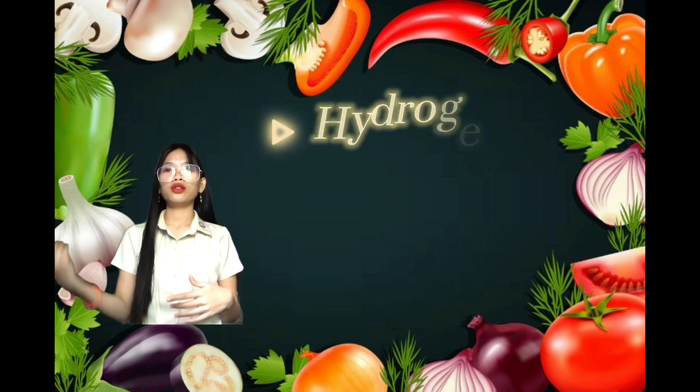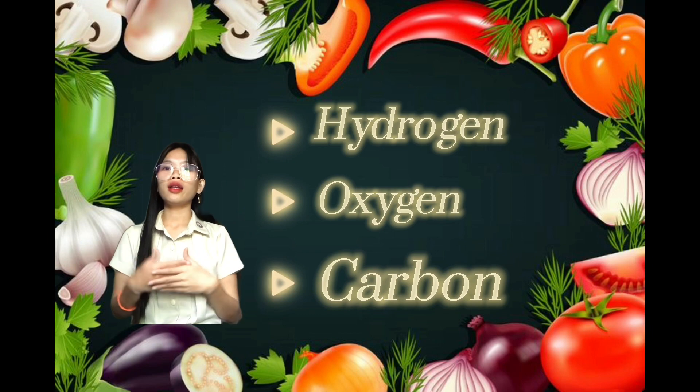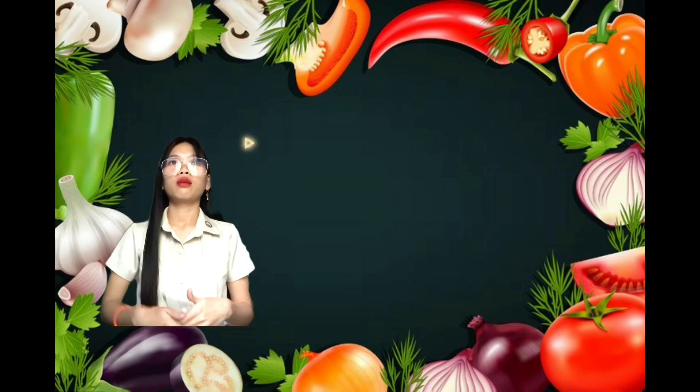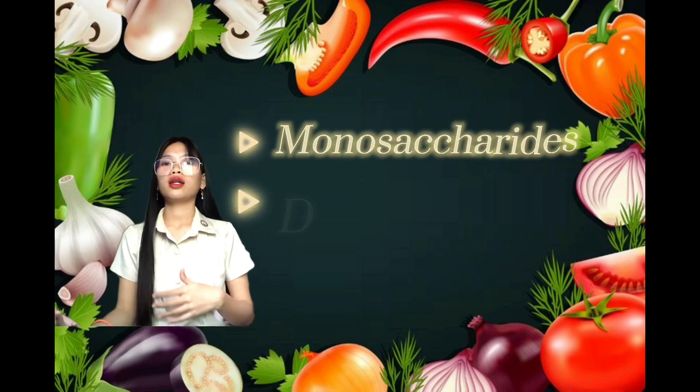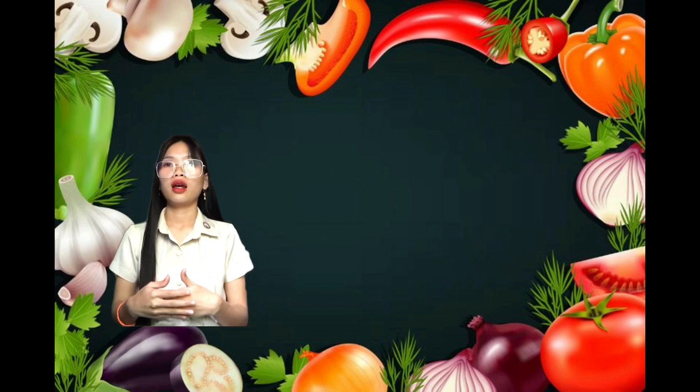Carbohydrates are organic compounds made of hydrogen, oxygen, and carbon. Carbohydrates also have three types: they are monosaccharide, disaccharide, and polysaccharide.